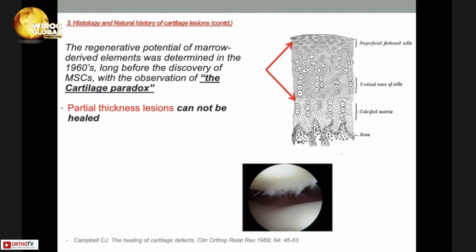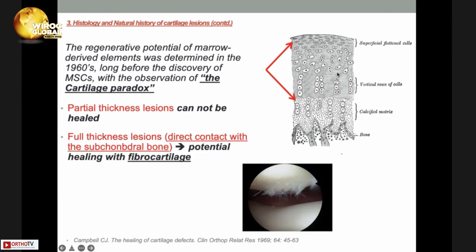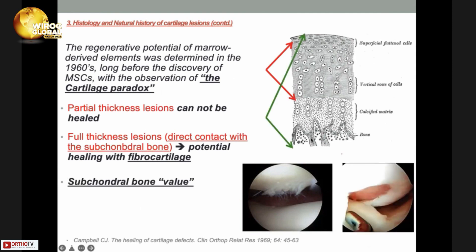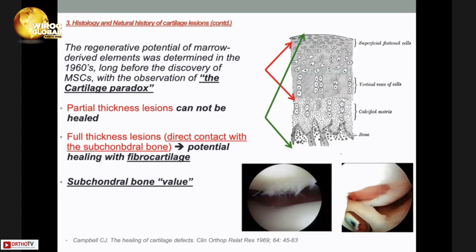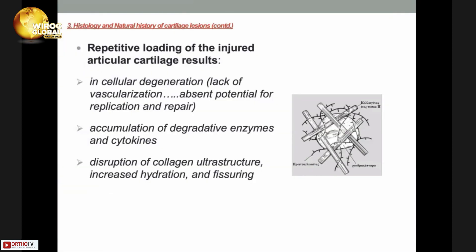The regenerative potential of bone marrow-derived elements was determined in the early 1960s, long before the discovery of mesenchymal stem cells, with the observation of the cartilage paradox. When we have a partial thickness lesion, there is no way for that cartilage lesion to heal. But when we have a full thickness lesion with direct contact with the subchondral bone, there is a potential for healing with fibrocartilage.